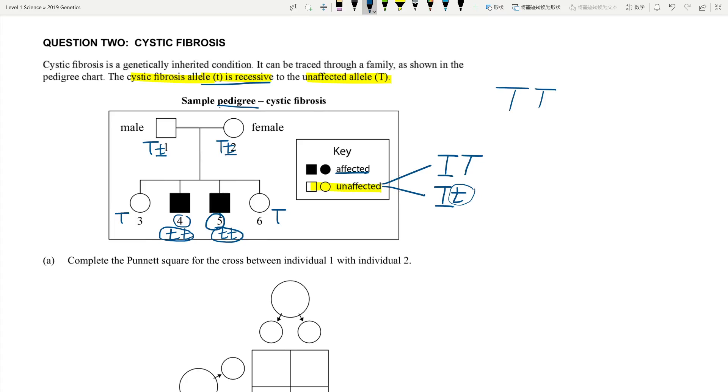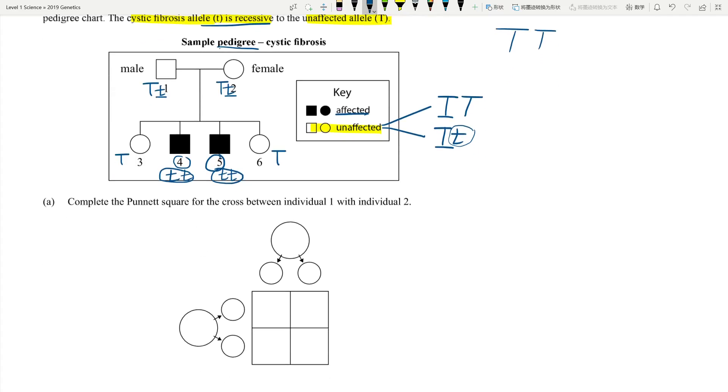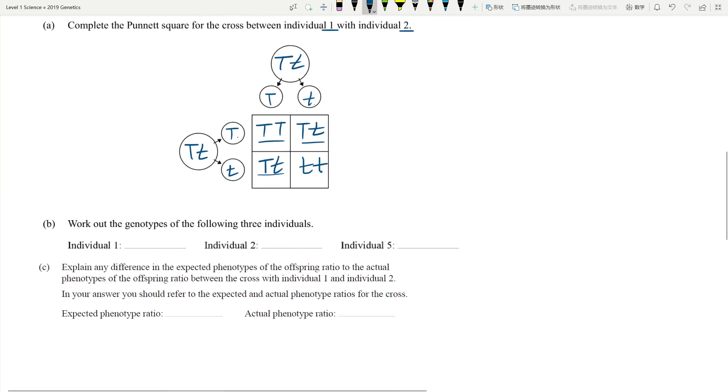So this is when we can draw the Punnett square. So for number three and number six, we actually don't know. We can't decide because it can either be big T, small t, or big T, big T, and we can show this by doing the Punnett square. So let's look at individual one, individual two. This is heterozygous, this is heterozygous. So this is big T, small t, this is big T, small t. And when we do Punnett square, you just cross multiply. This is big T, small t, this is small t, big T, this is big T, small t, and this is homozygous recessive, small t, small t. So why can we not determine these two? Because it could be either this one, this one, or that one. We don't know what it is because they all look the same. They have the same phenotype. They don't have cystic fibrosis.